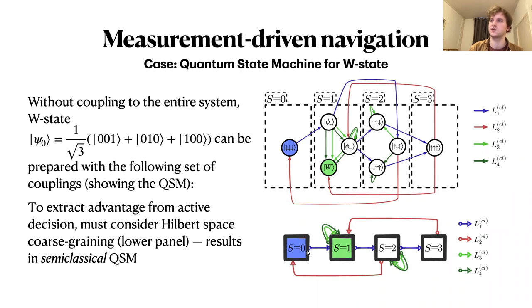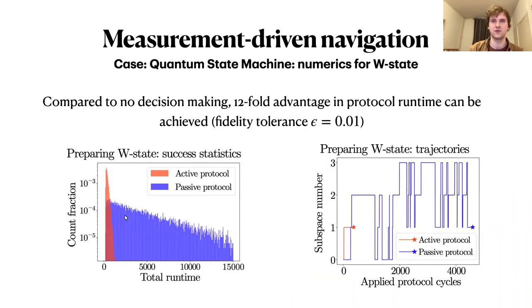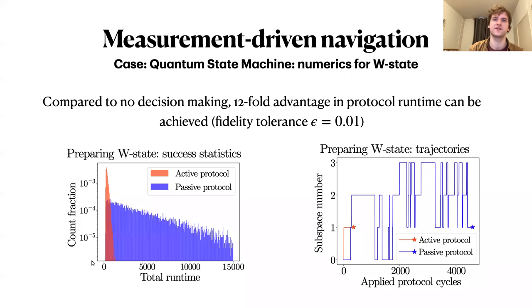In the passive approach, two clicks from the blue line might overshoot to state two, then you need a red coupling to correct, and eventually reach the target by chance. This leads to very different histograms: the passive protocol runtime is distributed widely — on a log-log scale, up to 15,000 steps — while the active protocol runs much faster. The active protocol goes directly to the target; the passive protocol just loops over all couplings until eventually reaching it by luck.